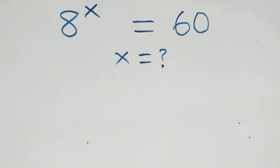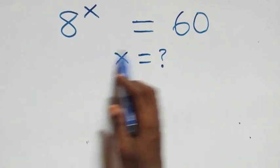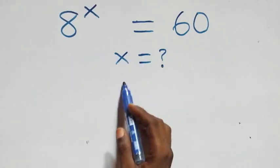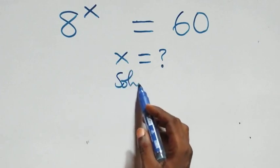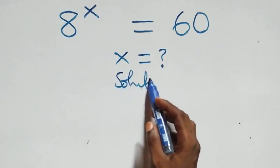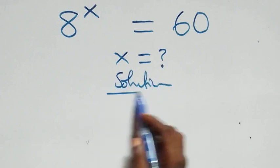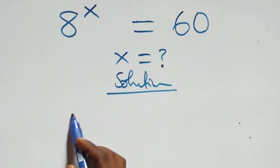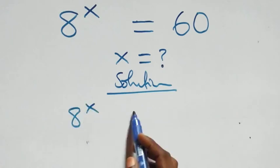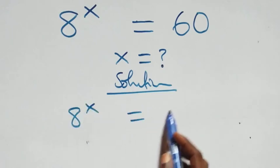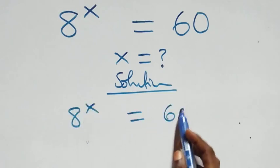How to solve this nice exponential equation. What we have here is eight raised to power x equals to sixty.